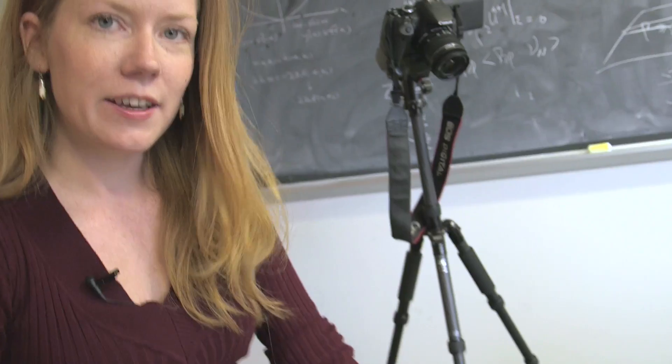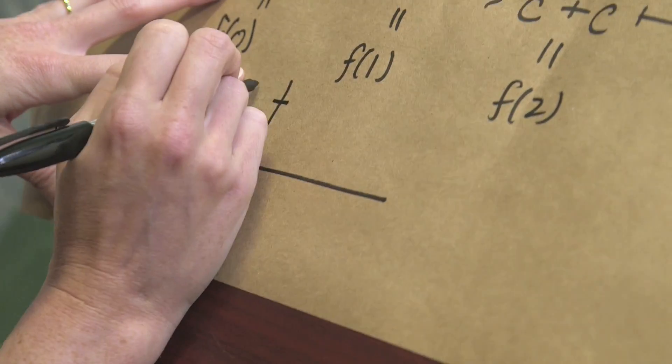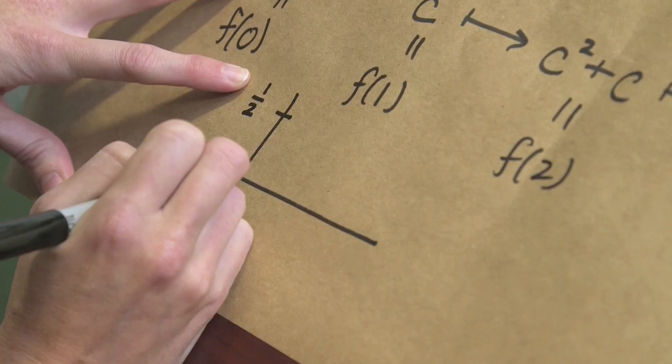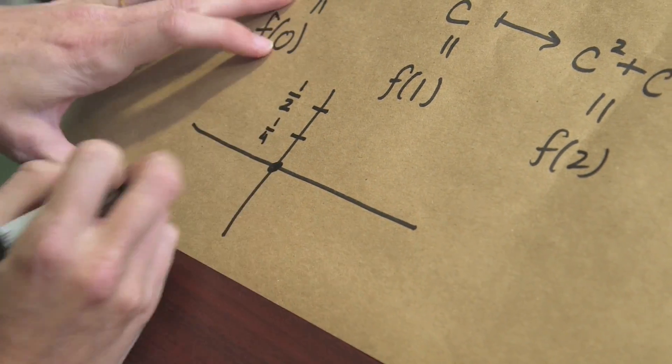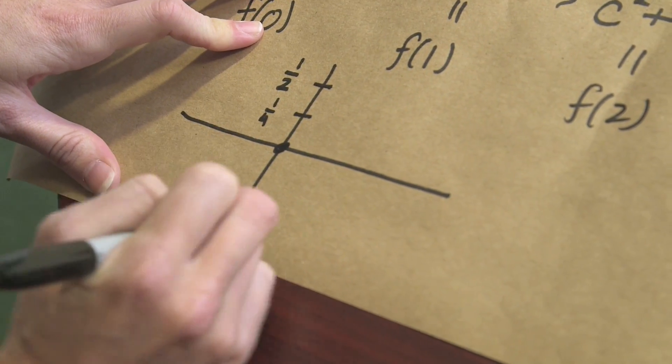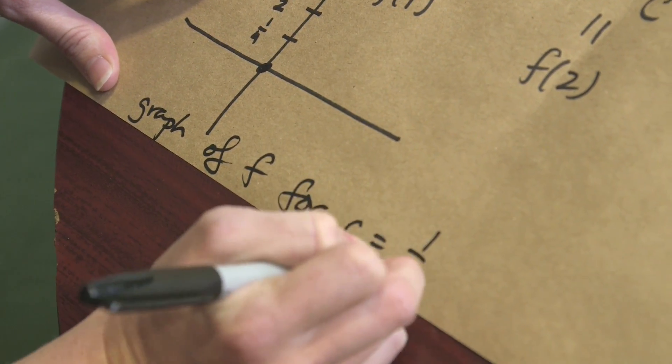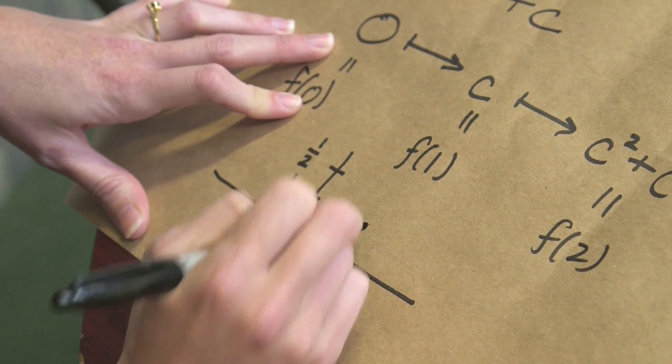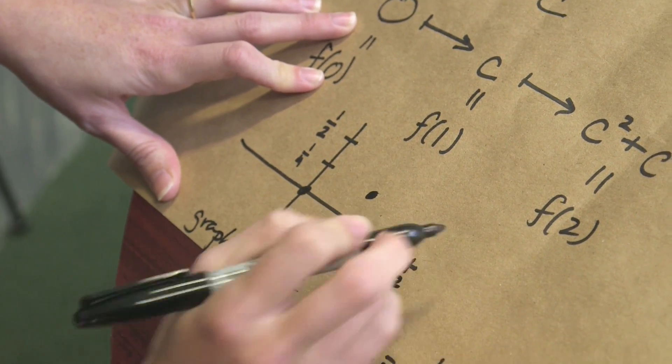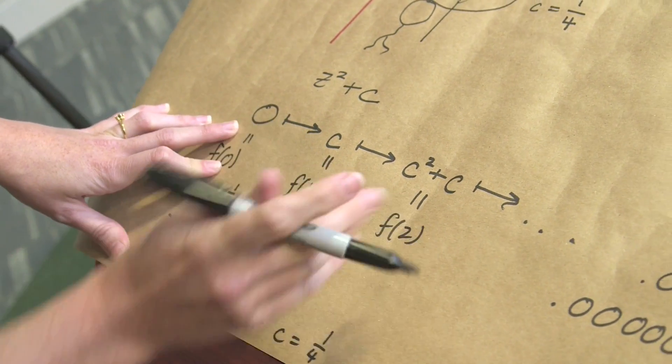The graph of this function, what this looks like if c is close to 1 quarter. Well if c is equal to 1 quarter, then what happens? So f of 0 is 0. Let's put 1 quarter on here too. So this is the graph of f for c equals 1 quarter. And then f of 1 is c which is 1 quarter, and remember what happens in this case we get closer and closer to 1 half but we never hit it.